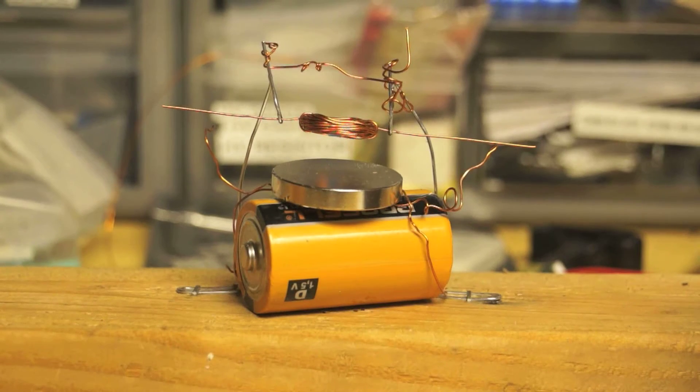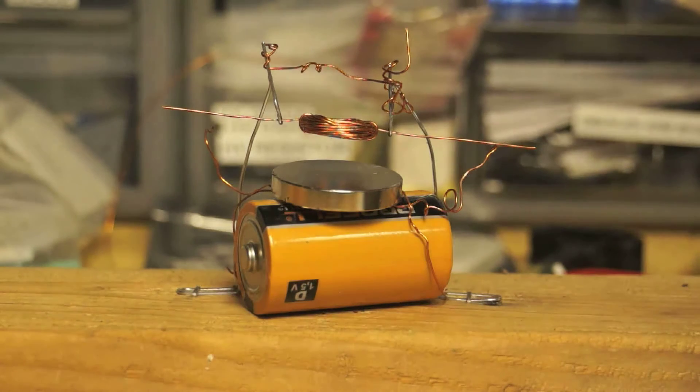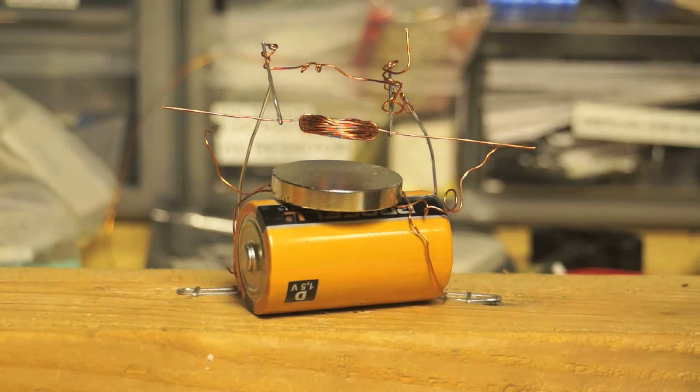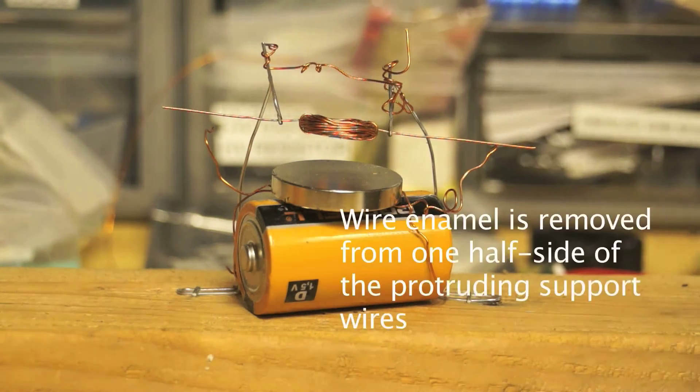So what I have here is an attempt at the MIT Motor Challenge. It's to construct a motor with two meters of 24 gauge magnet wire, a 1.5 volt battery, a magnet, two paper clips, and two tacks and a block of wood.